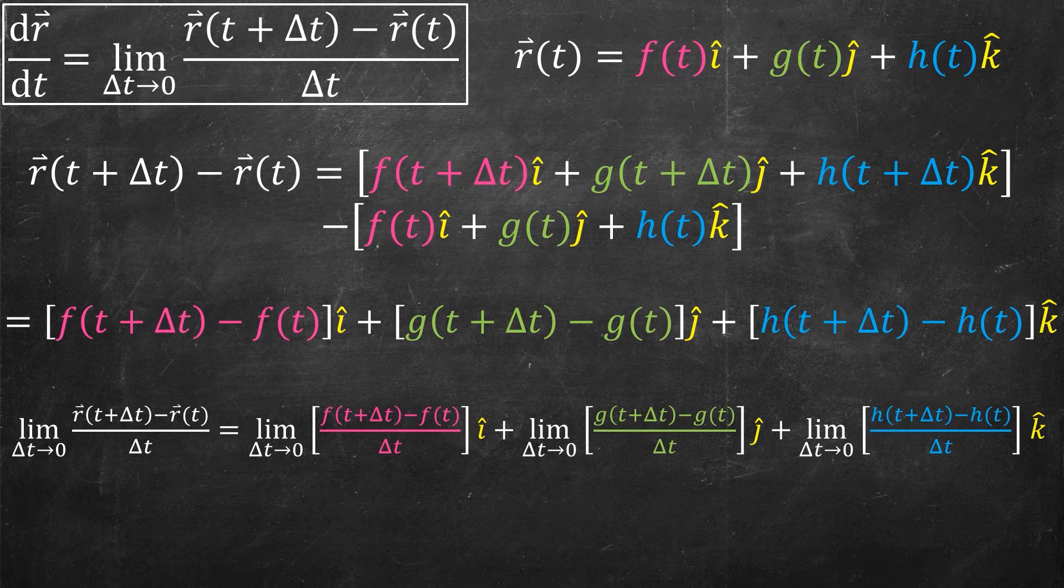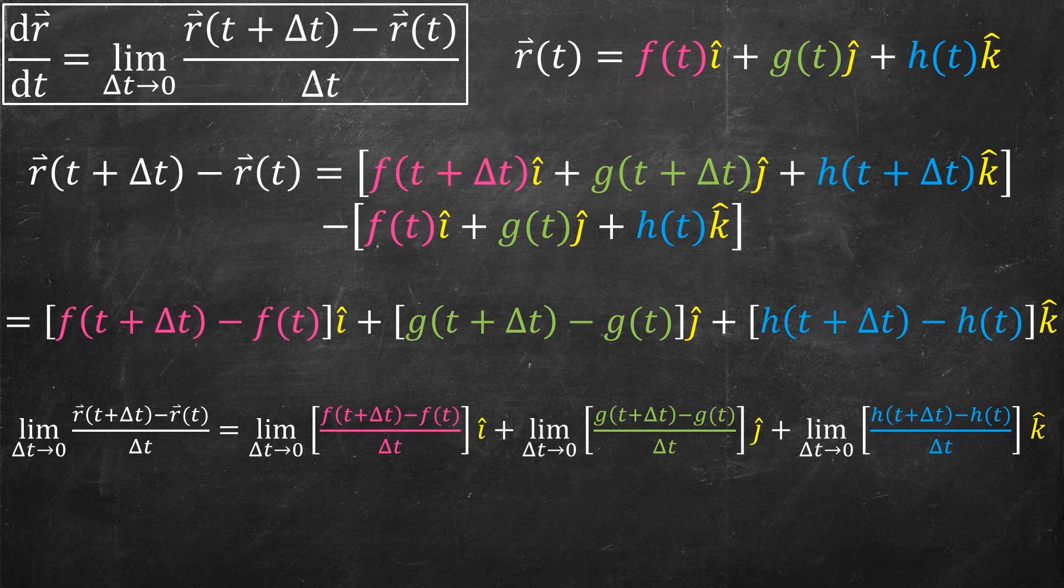But now I should recognize these different things. What is the first limit, the pink one? The limit is delta t goes to zero of the f. That is nothing but what we've seen in first-year calculus. This is all a single variable function. Remember, f is a scalar function.